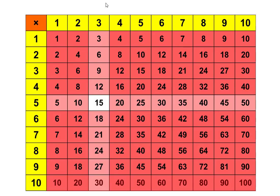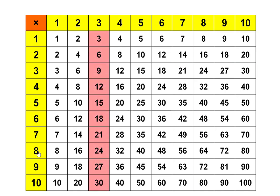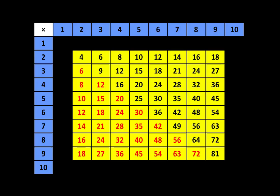This is our multiplication table and you may have already noticed that some products are on the chart in more than one place. For example, 3 times 8 is equal to 24 is shown here, but 3 times 8 is 24 is also shown here. And that has to do with the commutative property of multiplication, which we're going to examine in this video.